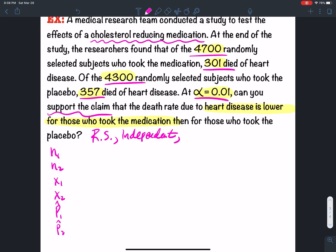So the first population, the ones that took the drug, the medication, there were 4,700 total, and 301 died.